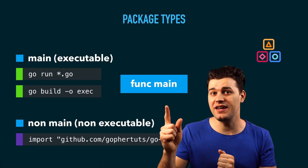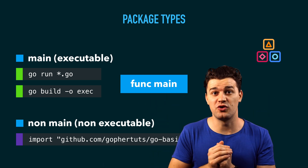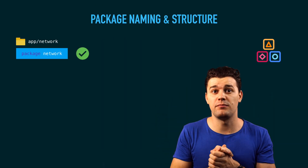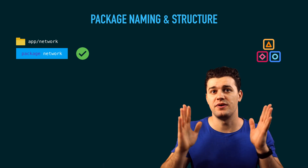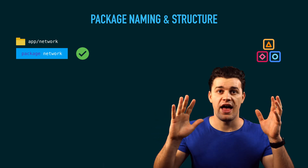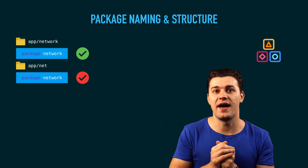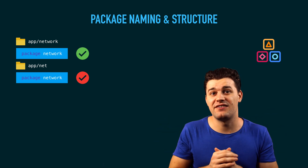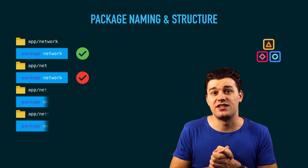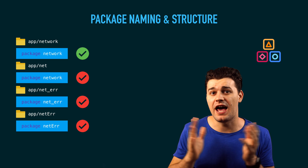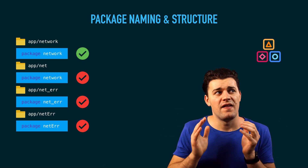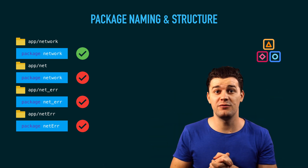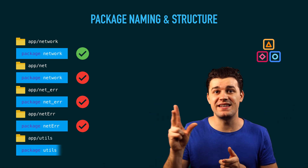When it comes to packages, you have to keep in mind naming and how you structure them — there are good practices and bad practices. A good practice is: if you have a directory named network, your package should also be named network. Your directory name should equal your package name. A bad practice would be to name your directory 'net' and your package 'network' — that brings inconsistency and confusion. Another bad practice is naming your directory using underscores or camelCase. You want to keep your packages specific and short, preferably one word. Packages like 'utils' or 'misc' are a bad practice.